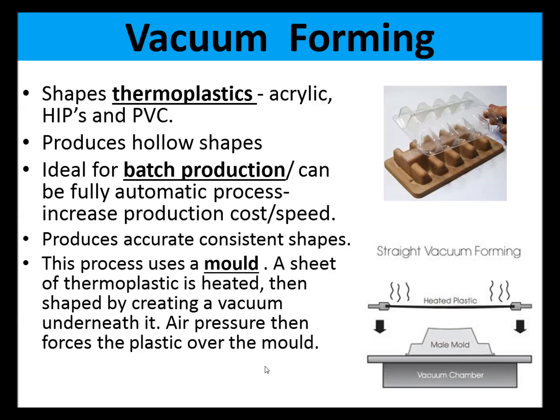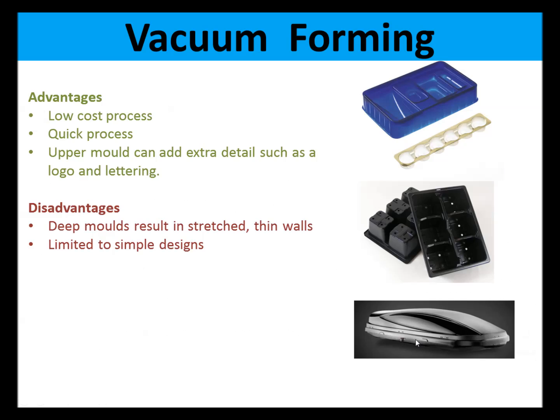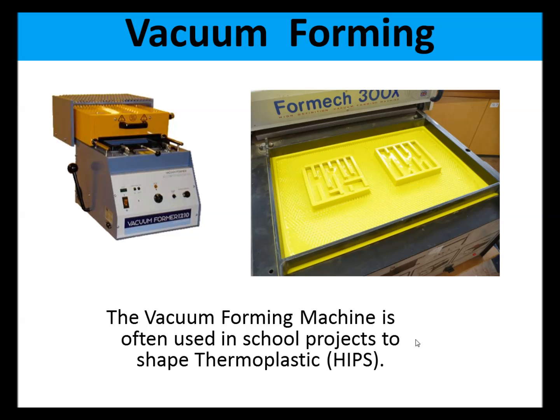Vacuum forming is used to shape thermoplastics such as acrylic, HIPS and PVC. It produces hollow shapes and is ideal for batch production, though it can be automated up to a mass production process. It produces accurate, consistent shapes using a mold, with the item shaped by creating a vacuum underneath. The advantages are it is a low-cost, quick process and the upper mold can add extra details such as logos and lettering. The disadvantage is that deep molds result in stretched, thin walls and the process is limited to simple designs with a regular wall thickness.